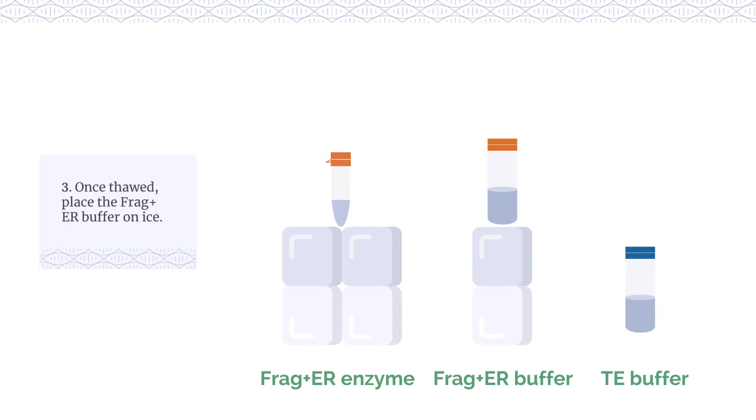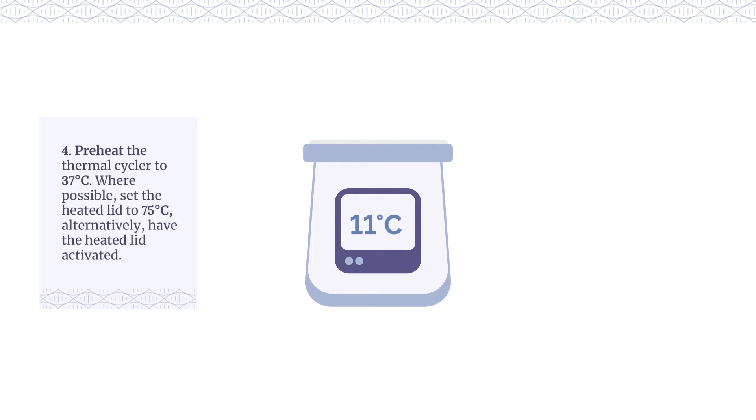Once thawed, place the Frag Plus ER buffer on ice. Preheat the thermal cycler to 37 degrees centigrade. Where possible, set the heated lid to 75 degrees centigrade.